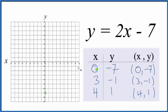Then we have x is 3 and y is negative 1, so we go over to 3 on x and down 1 to negative 1. And finally, x is 4—1, 2, 3, 4—and y is 1. You can see these points, they line up.